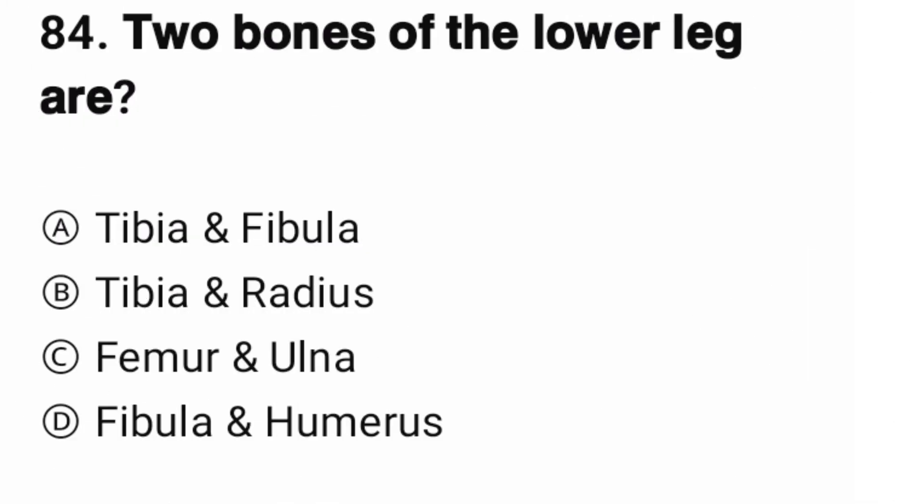Question number 84. Two bones of the lower leg are? The correct option is A, tibia and fibula.